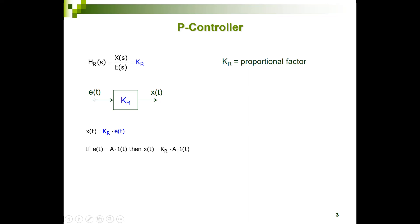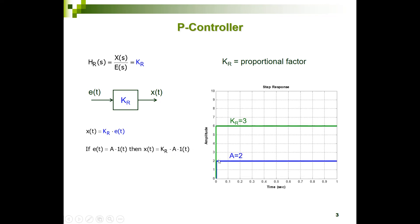The input is the signal E, the error of the controller, and this is the output of the controller, which is the input of the process. In the time domain, the output is equal to the error times the gain KR. If the error is a step function — a constant value times the unity step — the output is KR times that input. Suppose we have an input signal with a gain of 2 and our gain is 3, then the output signal has a value of 6.